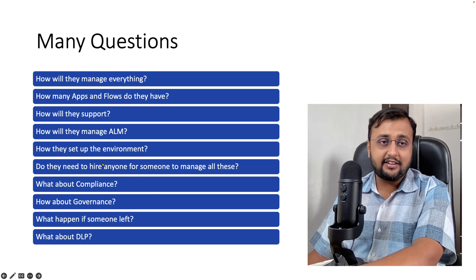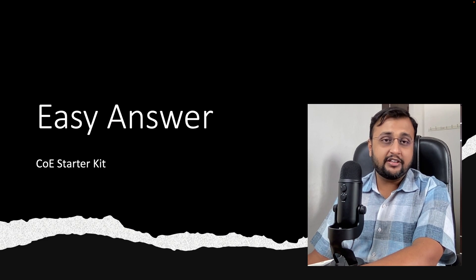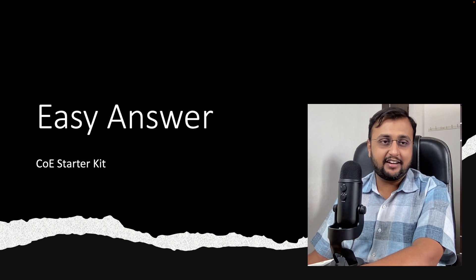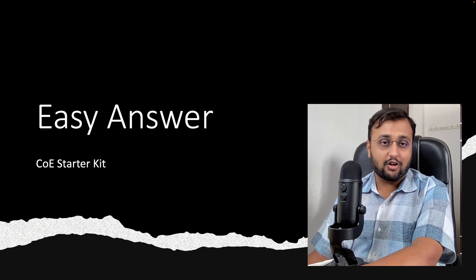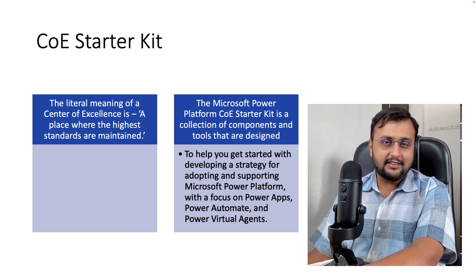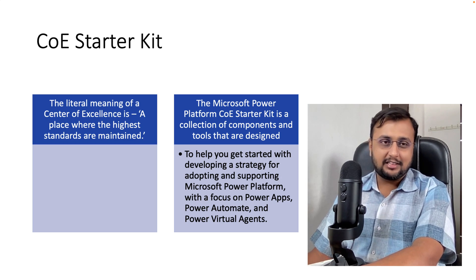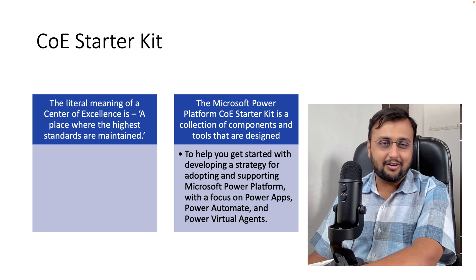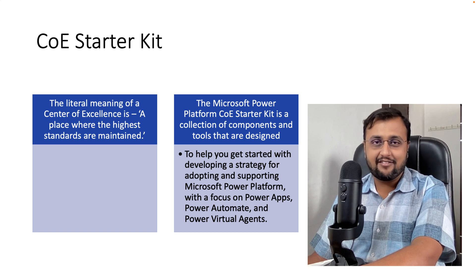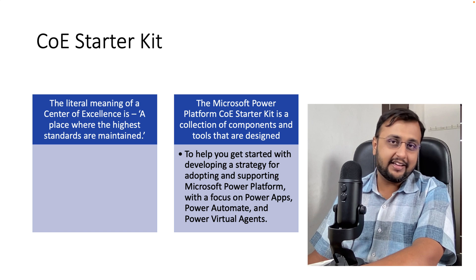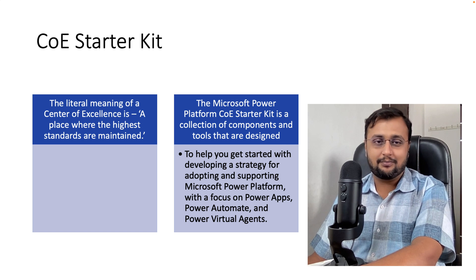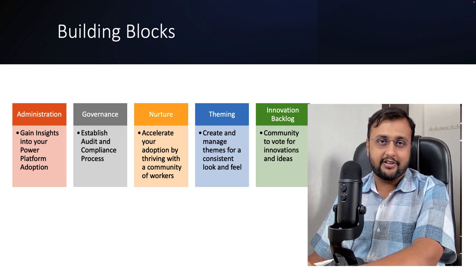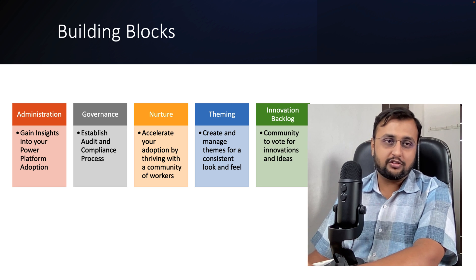The one answer to all these questions is the COE Starter Kit — the Center of Excellence Starter Kit. COE Starter Kit is a collection of components that help us develop a strategy for adopting and supporting Power Platform. It has been built upon five major building blocks based on administration, governance, nurture, theming, and innovation backlog.